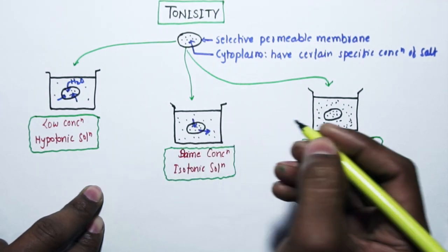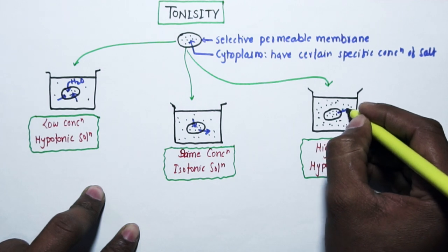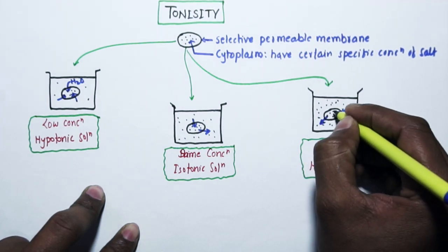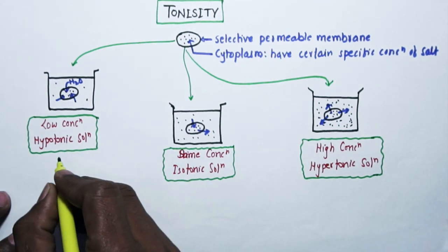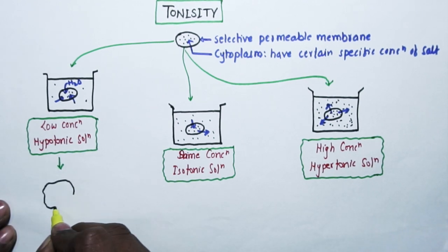In the first beaker, water will move towards the cytoplasm. In the second beaker, since the concentration is same, whatever water comes inside the cell, the same amount goes outside, so there is no net change. In the third beaker, water will move from cytoplasm to the salt solution.